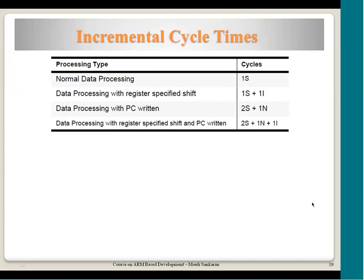Now let us talk about the incremental cycle times of each instruction. Normal data processing instructions take one sequential cycle. With a full pipeline and no stalls or quashes, the effective throughput is one instruction per cycle — every sequential cycle one instruction comes out of the pipeline.